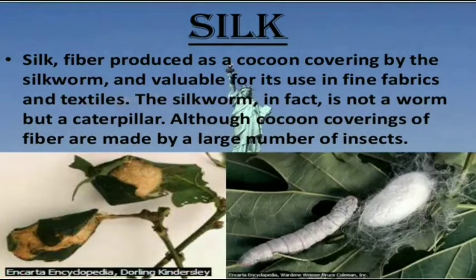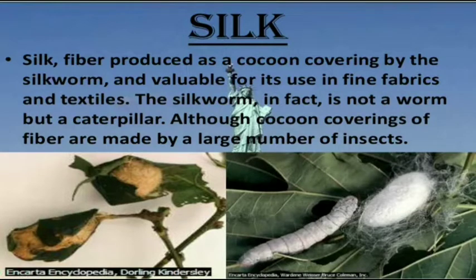Silk: fiber produced as a cocoon covering by the silkworm, valuable for its use in fine fabrics and textiles. The silkworm is in fact not a worm but a caterpillar, although cocoon coverings of fibers are made by a large number of insects. You can see the caterpillar and the cocoon in the image.